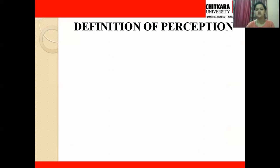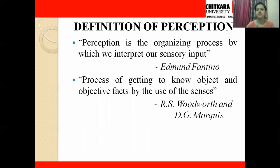There are different definitions of perception provided by different authors. First, Edmund Fentino says perception is 'the organizing process by which we interpret our sensory input' — we organize what our sensory organs collect into particular information and then act on it. Second, R.S. Woodworth and D.G. Marcus define it as 'the process of getting to know objects and objective facts by the use of the senses.' Both definitions agree that our sense organs collect information and the brain acts on it to find a solution.